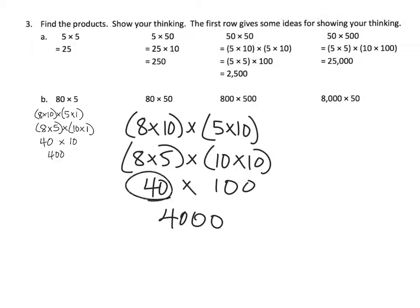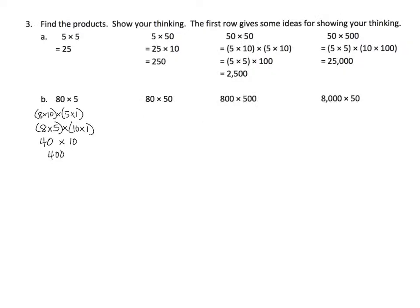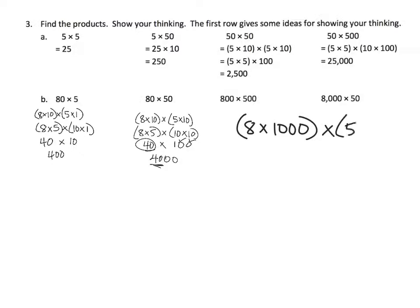Let's squeeze in one last example - 8000 times 50. Now 8000 is 8 copies of a thousand times, and then 50 is 5 copies of 10. Using the commutative property to rearrange everything and the associative property to regroup, we have 8 times 5 times 1000 times 10.